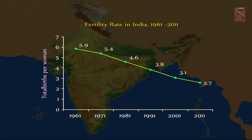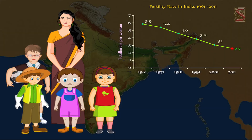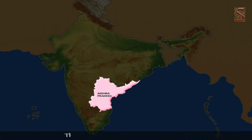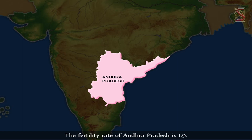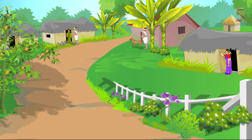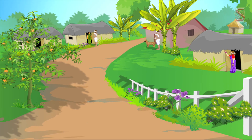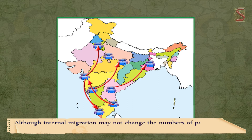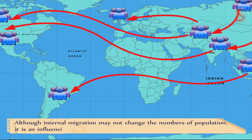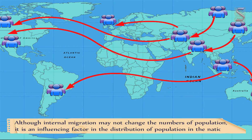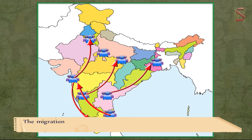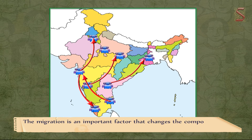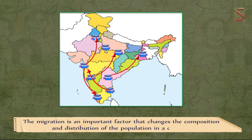The fertility rate in India currently stands at 2.7, meaning on average each woman is likely to have three or four children. The fertility rate of Andhra Pradesh is 1.9. Another important element contributing to population change is migration. Although internal migration may not change total population numbers, it is an influencing factor in the distribution and composition of population in the nation.